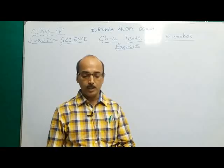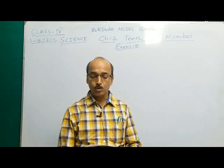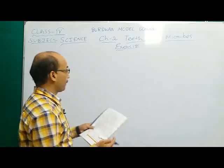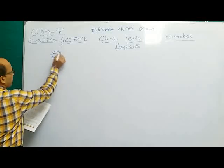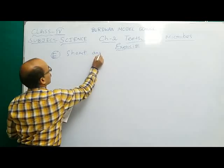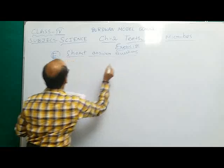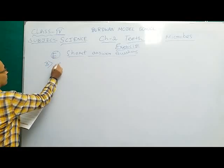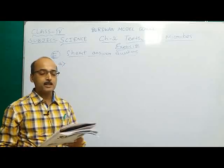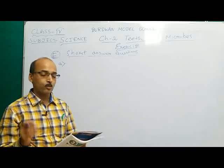We are doing short answer question E, continuing from question 3. Question number 3: Monica eats too many sweets and chocolates. Her friend Nitika always stops her from doing this. So Monica is eating too many sweets and chocolates and her friend Nitika always stops her from doing this.